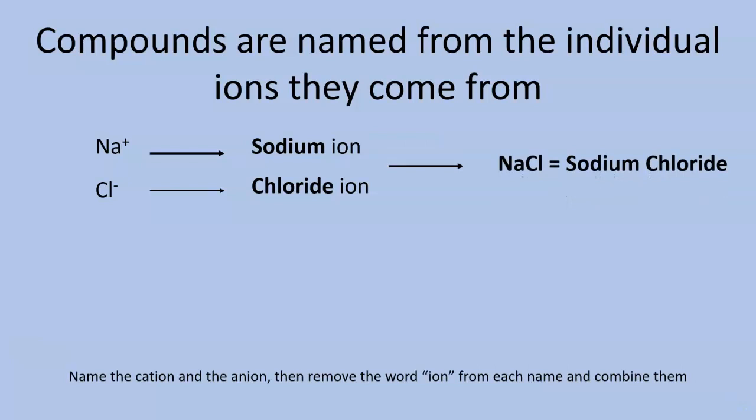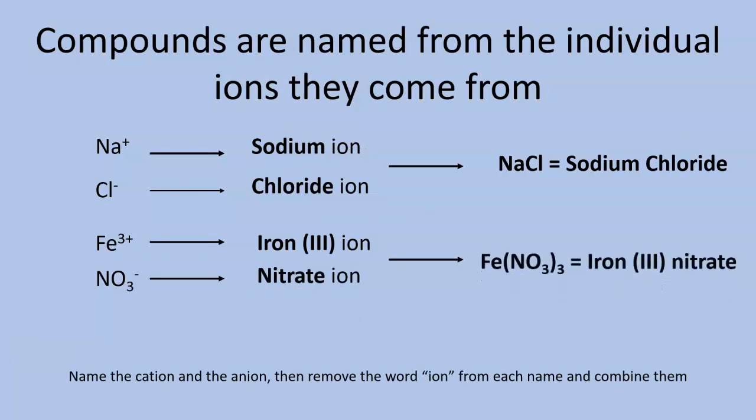Now if we do one more, we have an iron three ion and then we have a nitrate ion. If we combine those two and remove the word ion, we have iron three nitrate. Now in the iron three nitrate right here, we have a Roman numeral. This is called our stock system. This is used when an element can form a variable charge or a multiple charge.